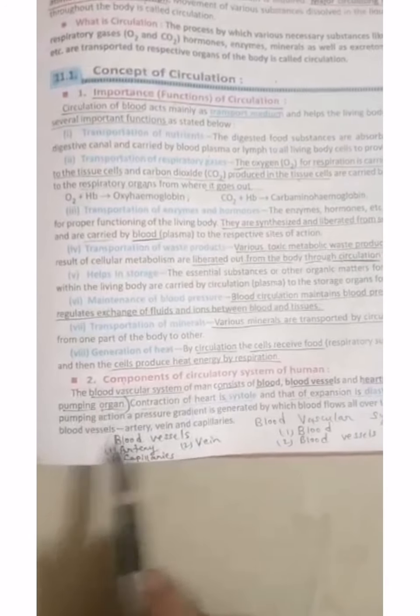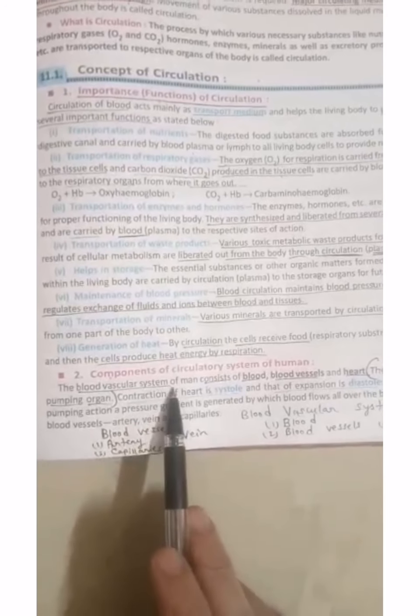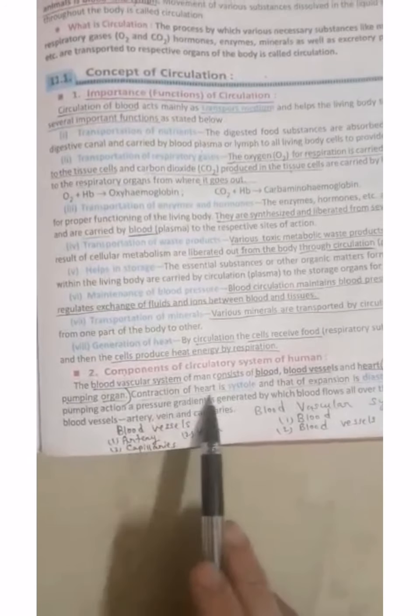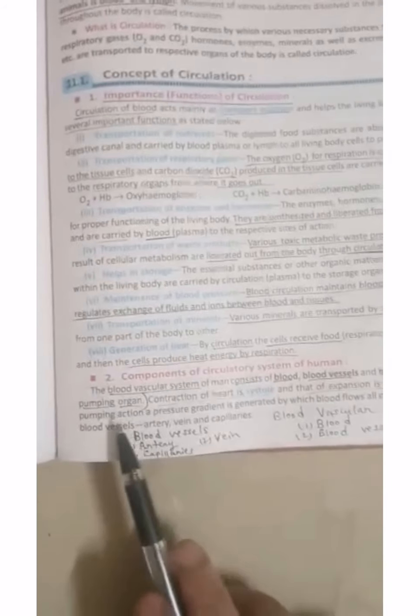The next topic is components of circulatory system. Blood vascular system of man consists of blood, blood vessel and heart. These three. The heart is the pumping organ. Contraction of heart is systole. What do we call the expansion of heart? Diastole. Due to this pumping action, a pressure gradient is generated by which blood flows from all over the body through blood vessels.